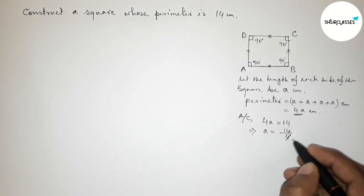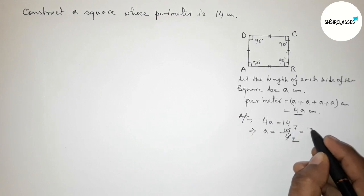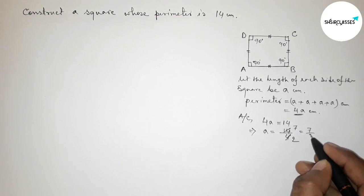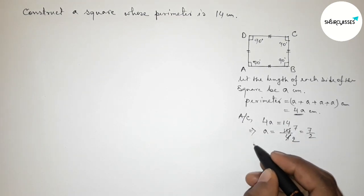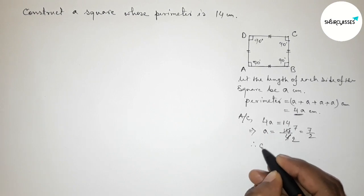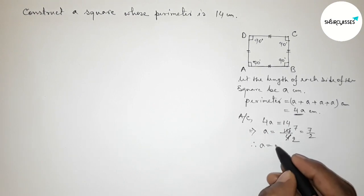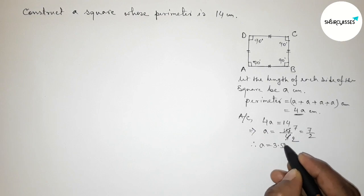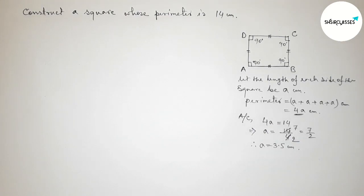Simplifying: a = 14 divided by 4. Dividing both numbers by 2 gives 7 by 2, so a = 3.5 centimeters. Next, we have to construct a square of side 3.5 centimeters.